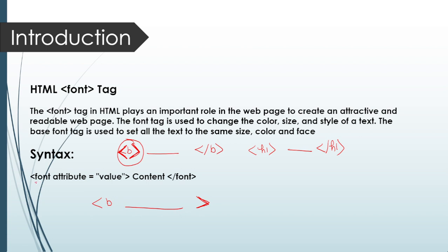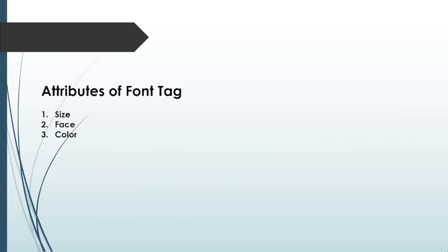In the syntax, we write font, then attribute and value — meaning we can use these properties along with the font tag. In HTML we basically have three types of attributes: first is size, second is face, and third is color. For example, to increase or decrease the size of a paragraph, I will use the size attribute along with the font tag: font size equals 40, then close.